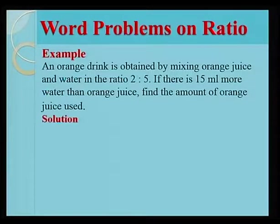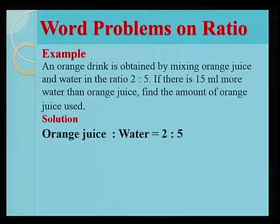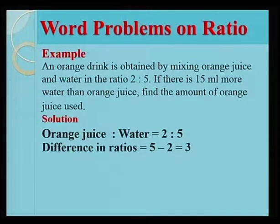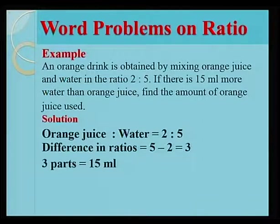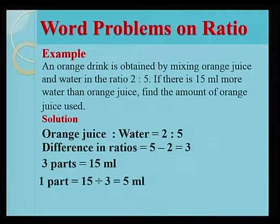We look at the solution. This is given orange juice to water, 2 is to 5. The difference in ratios 5 minus 2, we have 3. 3 parts equal 15 ml. 1 part equals 15 divided by 3 equals 5 ml.